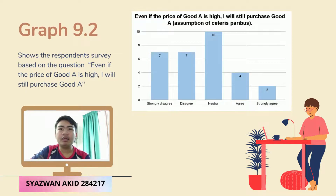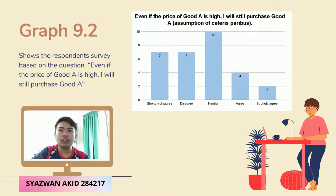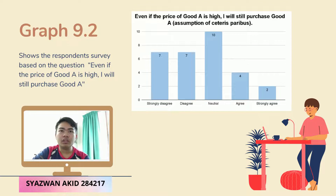Based on graph 9.2, the statement 'even if the price of good A is high, I will still purchase good A, by the assumption of ceteris paribus' showed that the highest response from 30 respondents was moderate, with 10 respondents choosing moderate. The lowest response included 2 respondents who chose strongly agree and 4 who chose agree. From 30 respondents, most will not purchase good A when the price is higher and will find other substitute goods.